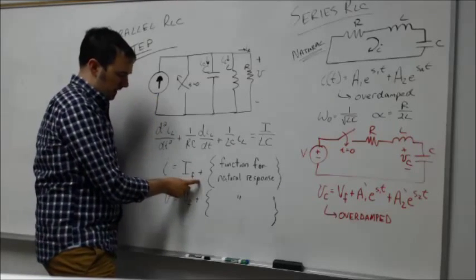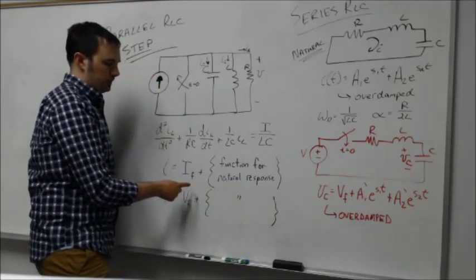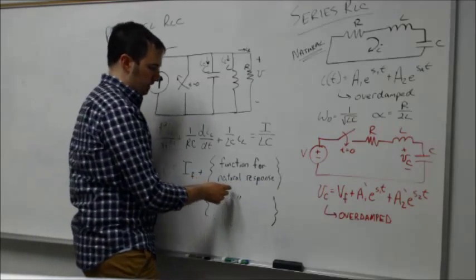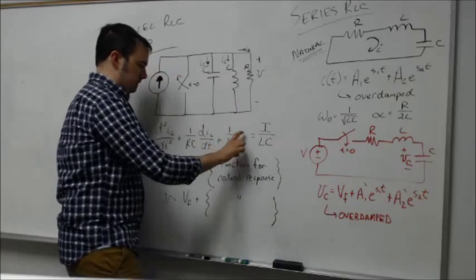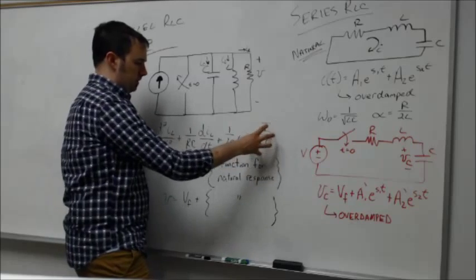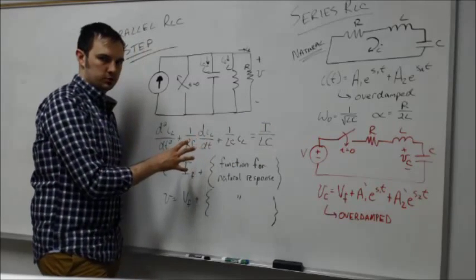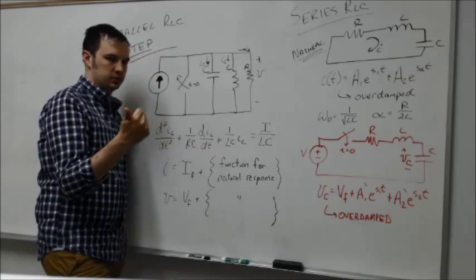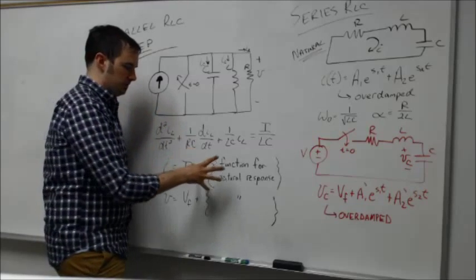So it would be that plus then the function for the natural response. If I go back, that's just basically if I had this equation equal to zero and we come up with those solutions prior, for the three different cases - over damped, under damped, and critically damped - I can plug that right in here and simply add that to whatever my final value would be for my current.